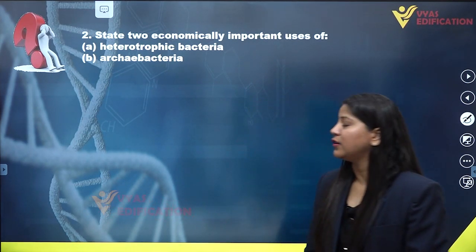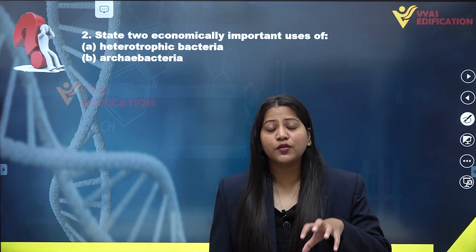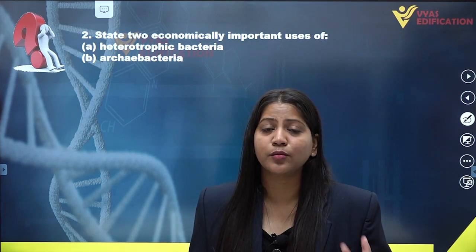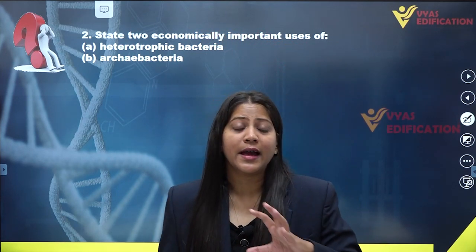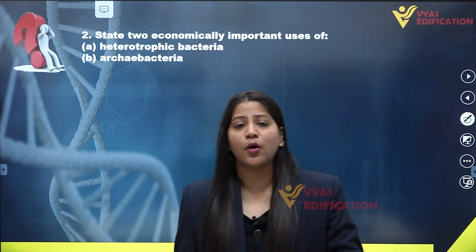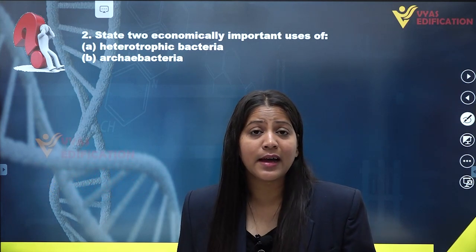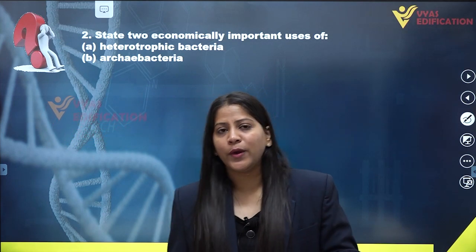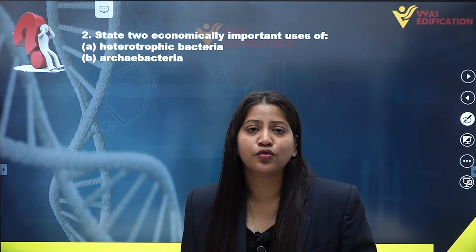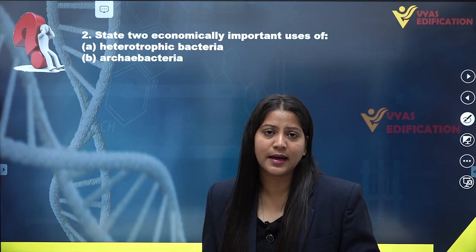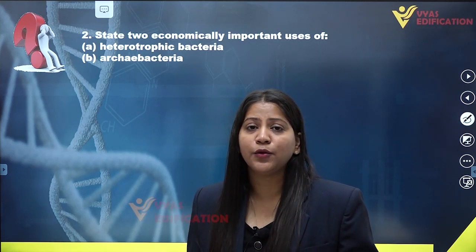First we are going to talk about heterotrophic bacteria. Heterotrophic means this is a type of mode of nutrition which includes all the organisms who obtain their nutrition from other organisms — they do not make their own food. All organisms except plants are heterotrophic in nature. Only plants are autotrophic, meaning they can synthesize their own food. Bacteria are also heterotrophic organisms because they are not capable of synthesizing their own food; they obtain their nutrition from other organisms.